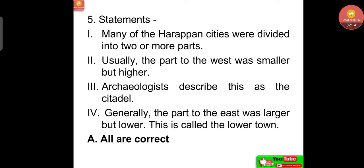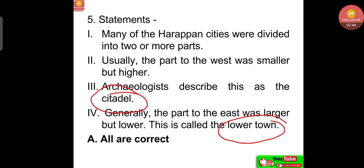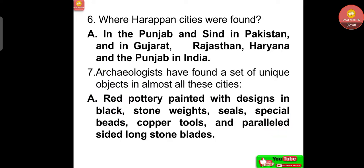Many of the Harappan cities were divided into two or more parts. Usually the part to the west was smaller but higher — archaeologists describe this as the citadel. The part to the east was larger but lower, called the lower town. These two terms — citadel and lower town — are very important to remember. Harappan cities were found in Punjab and Sindh in Pakistan, and in Gujarat, Rajasthan, Haryana and Punjab in India.